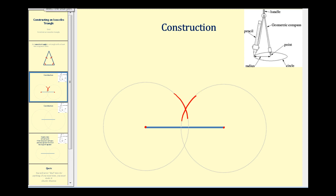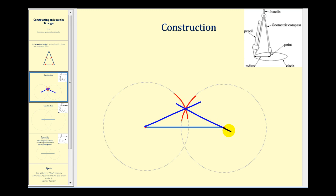Now we're going to use our straight edge and make a segment from this end point to the intersection of the arcs, and then another segment from this end point to the intersection of the arcs, and we'll have our isosceles triangle. Notice how the two congruent sides of this triangle have a length that's the radius of two congruent circles. So we're guaranteed that this side is congruent with this side, and therefore we have an isosceles triangle.